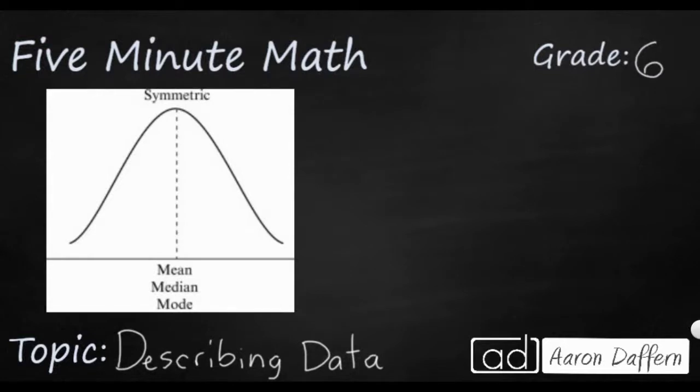So this is a graph that you might see here and this is what we would call normal distribution. That means everything works out perfectly and you've got your mean, your median, and your mode all clustered together in the middle.